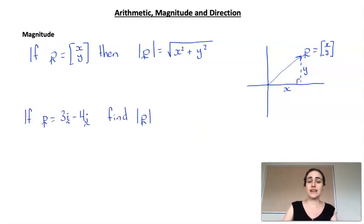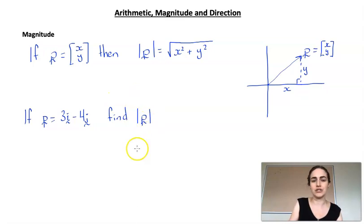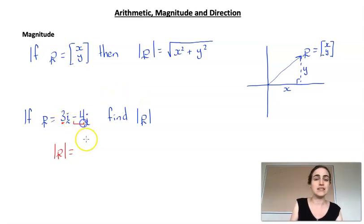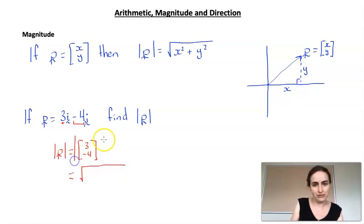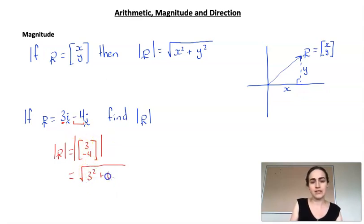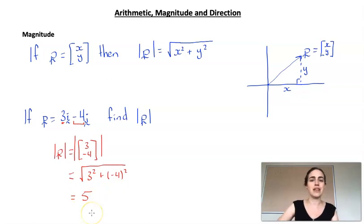For the magnitude example: given vector p as 3i minus 4j, we want to find its magnitude. Our x is 3 and our y is minus 4 — making sure to take that sign as well. So we take the square root of 3 squared plus minus 4 squared, and working that out, we end up with the vector being 5 units long.